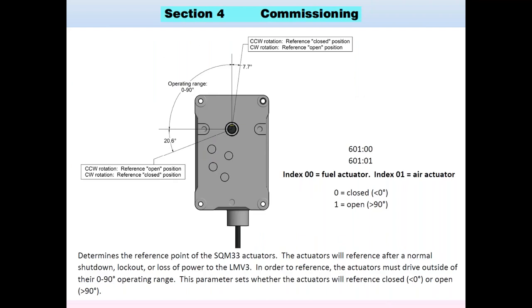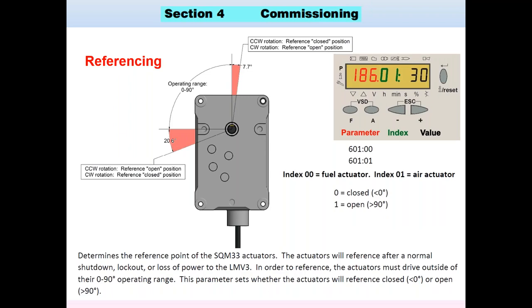All actuators on the LMV3 must have referencing — a range of operation outside the 90-degree operational window, going below 9 o'clock or above noon. In clockwise rotation, the 1 o'clock setting is the reference open. In counterclockwise rotation, the reference open is at the 8 o'clock range. These have indexes — parameter 601 — where the index chooses air or gas, and the value chooses either open or closed for referencing.